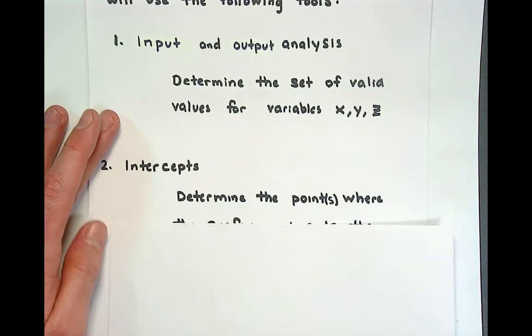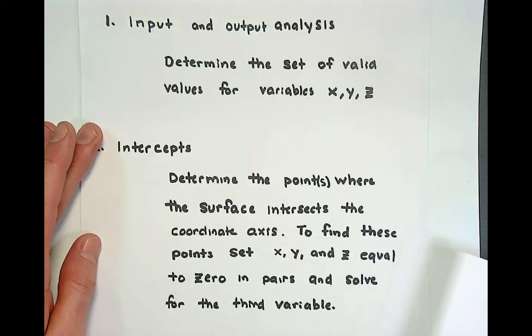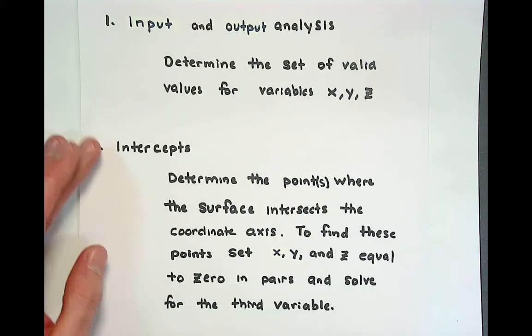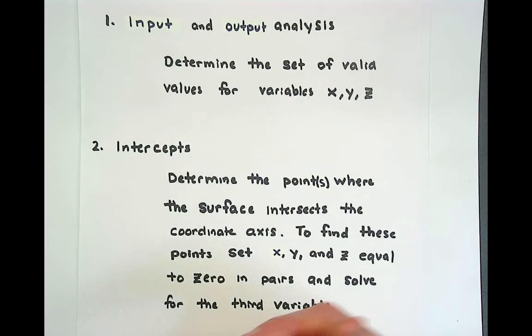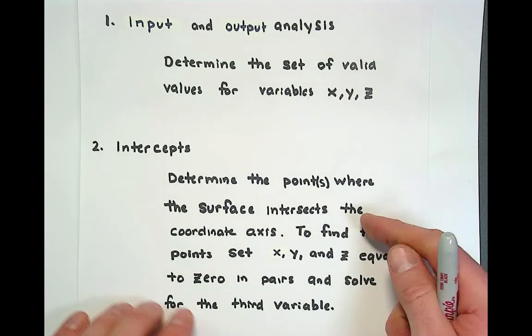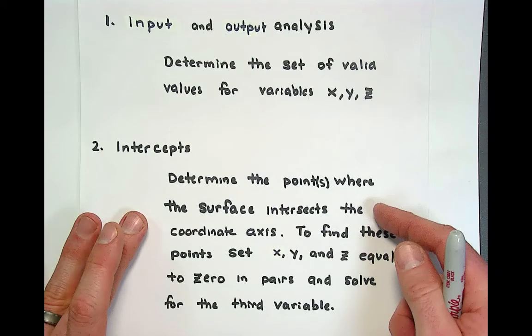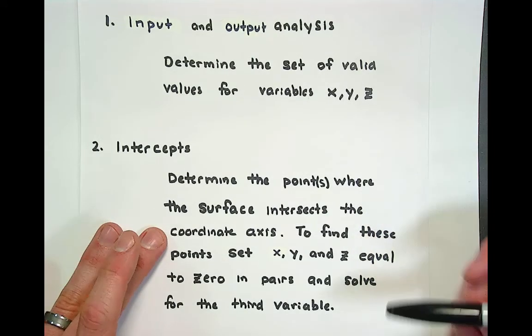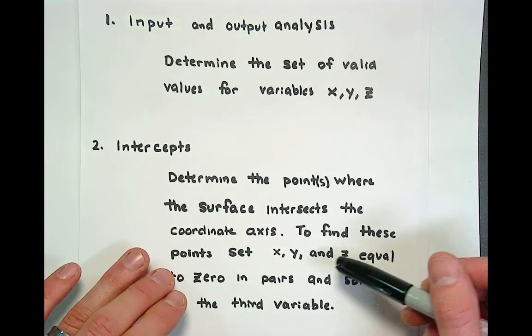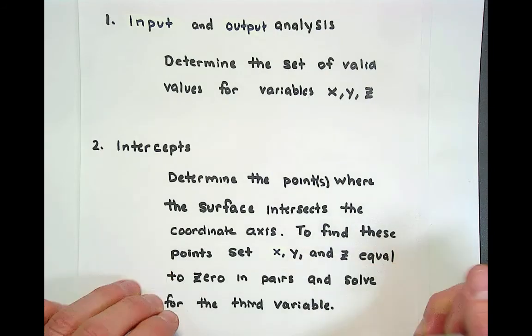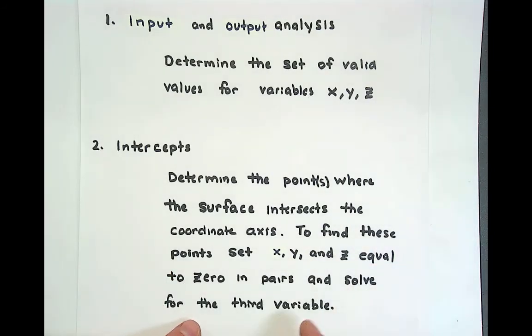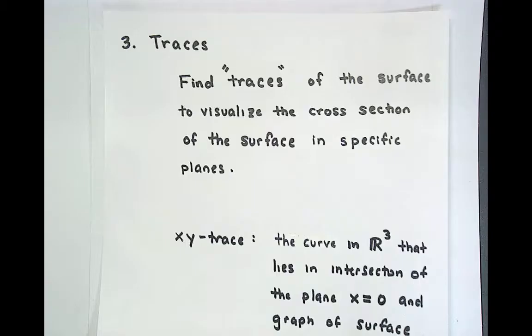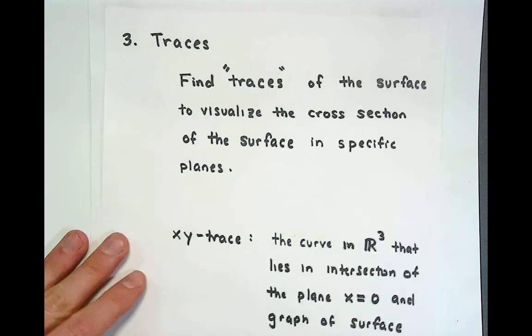But because we're implicit relations it's just figuring out what are the ranges of x, y, and z that are allowed on these equations. The second tool that we'll use is intercepts and this is where the surface will cross the coordinate axis. In order to define intercepts we're going to determine points where the surface intersects the coordinate axis and to do so we're going to set variables x, y, and z equal to zero in pairs and solve for the third variable and we'll show examples of this as we look through the four quadratic surfaces that we're going to focus on in this lesson.